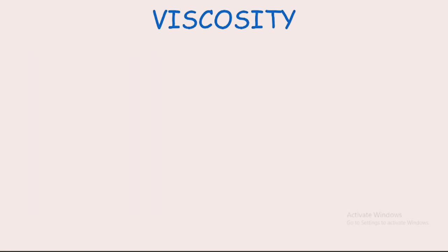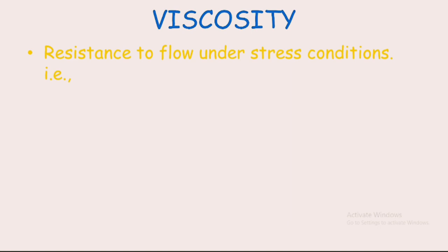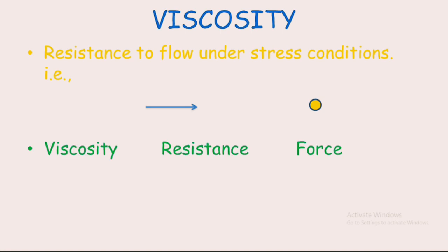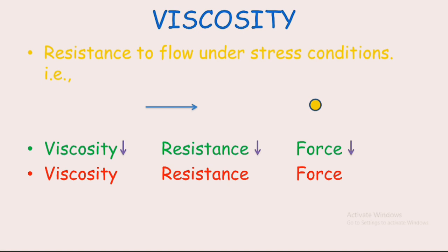The last kinetic property of colloids is viscosity. Viscosity is the resistance to flow of particles under stress conditions. When force is applied on a particle, it can either move fast or slow depending on the resistance experienced by it. When viscosity decreases, the resistance becomes low and less force is required to move the particle. Similarly, when viscosity increases, resistance also increases and it requires increased force to move. This is all about the kinetic properties of colloids.